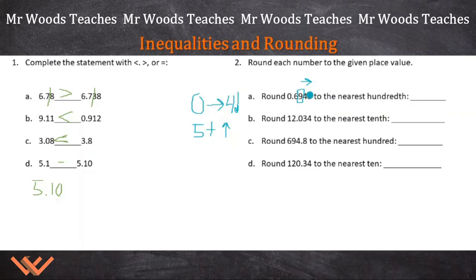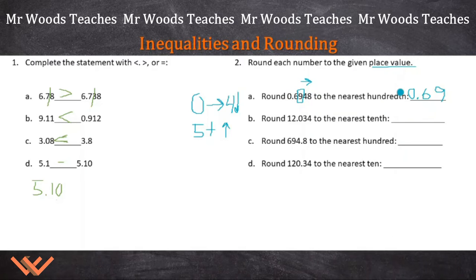Some people ask: aren't you supposed to round up based on the 4 and the 8? No — we're evaluating only the number immediately to the right of the target place value. That 4 means we round down, so it stays the same: 0.69. We do not change that digit. Let's evaluate B: 12.034 to the nearest tenth. The nearest tenth is right here, and the number immediately to the right is 3, so we round down. Our number is 12.0.